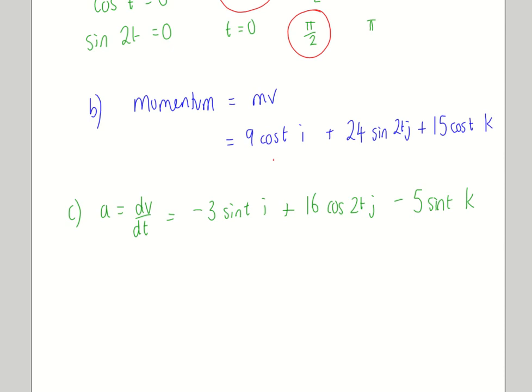F equals ma. M for this question was 3. So we've just got to multiply all of that through by 3 now then. So F equals minus 9 sine t in the i direction. 48 cos 2t in the j direction. And minus 15 sine t in the k direction. And that question there is finished.